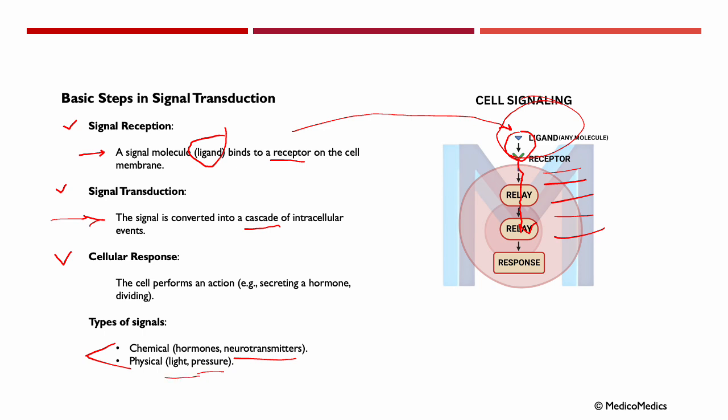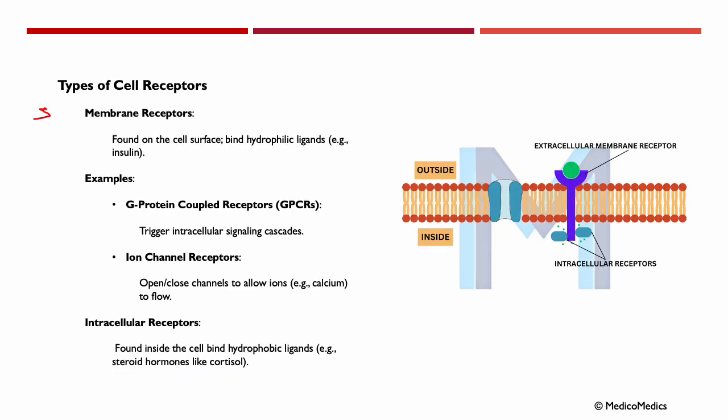Now, let's dive a bit deeper into the receptors that start the process. What kind of cell receptors do we have? We have membrane receptors. These are found on the cell surface, and these bind hydrophilic ligands like insulin. Examples of these membrane receptors include G-protein-coupled receptors. These trigger intracellular signaling cascades. We have ion channel receptors that open and close channels to allow ions to flow. Ions like calcium, magnesium, potassium, etc.